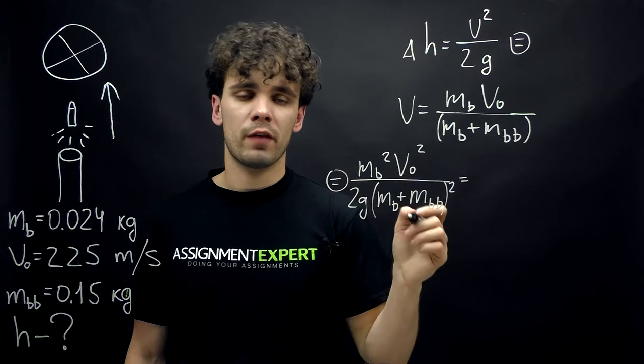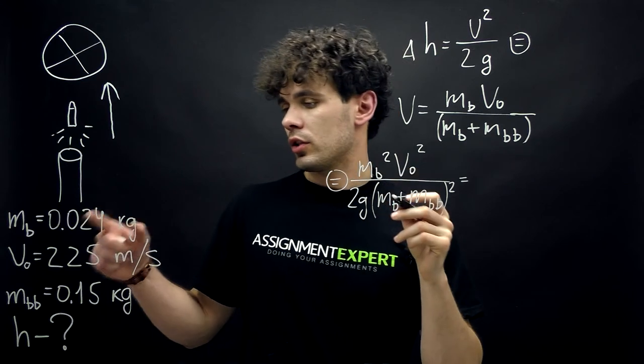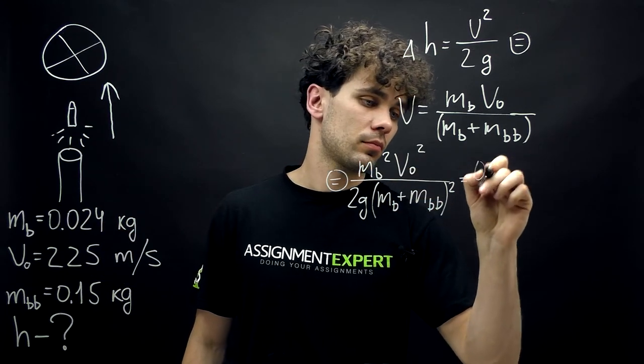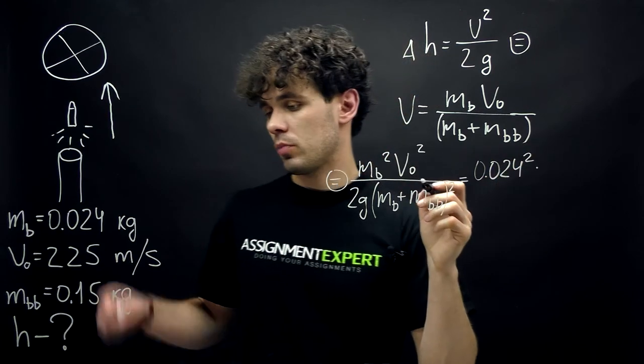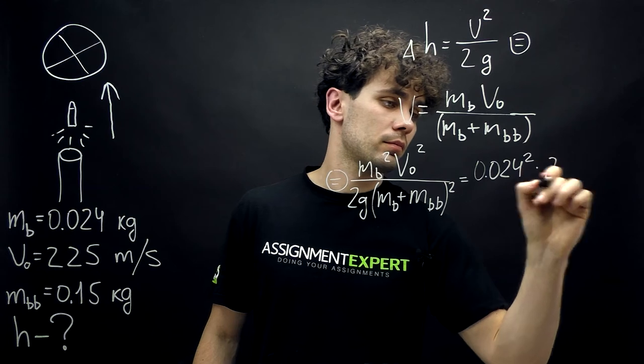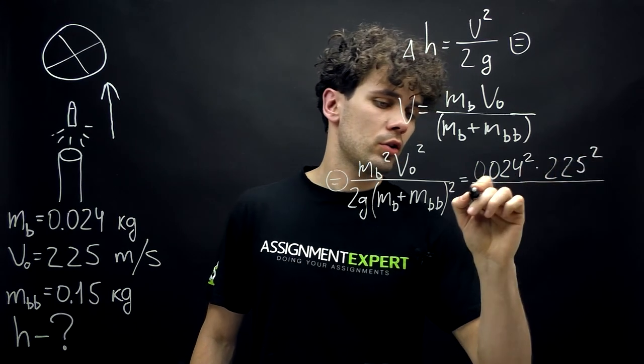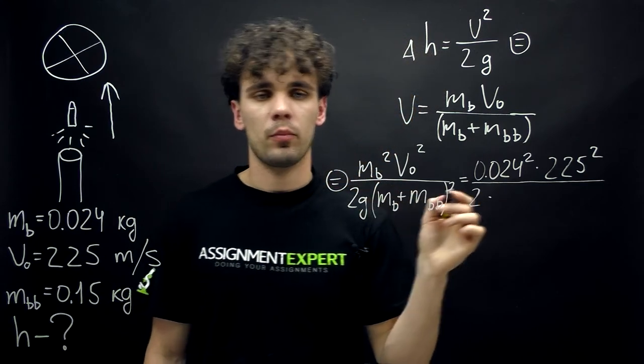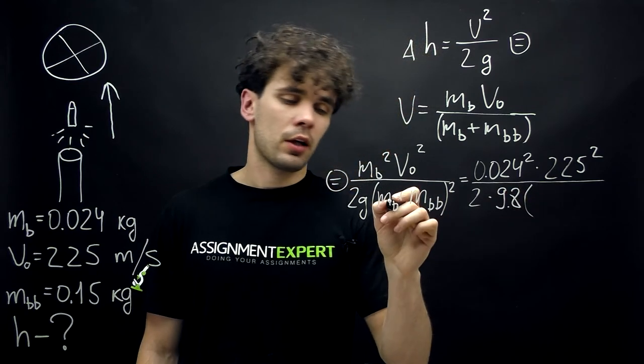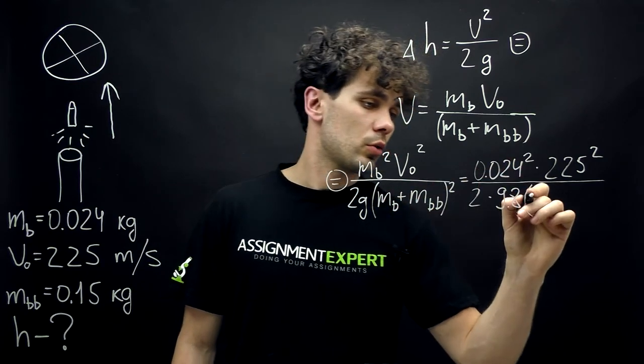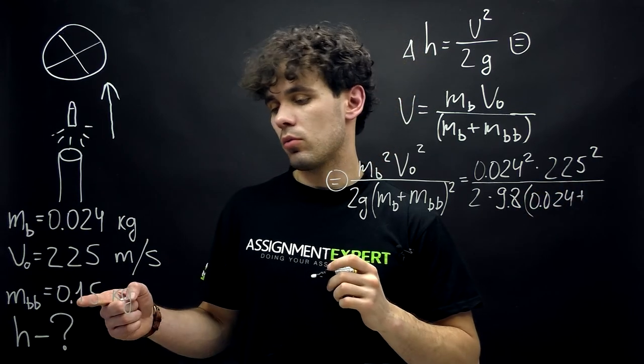We know all of these values, so now we can find the change of the height. So, the mass of the bullet is 0.024 squared. Then we have the initial speed, 225 squared over 2 times the free fall acceleration, 9.8, times again the mass of the bullet, 0.024, plus the mass of the baseball, 0.15.